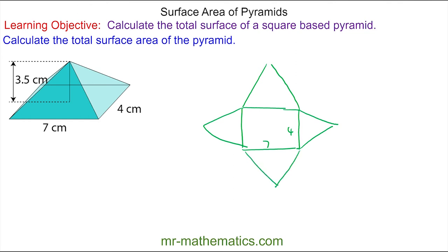Now we need to work out the perpendicular height of this triangle. You can see that this perpendicular height would be this length here, and this length is formed by a right angle triangle. So I'll draw this here.